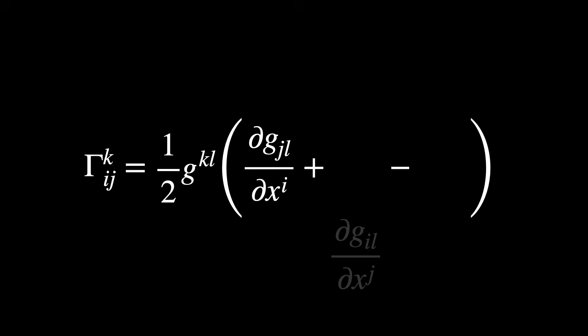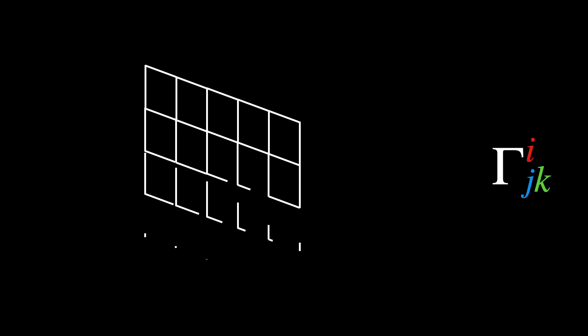Christoffel symbols are calculated in the following way. So one half of the inverse matrix times the sum and subtraction of the partial derivatives of the metric. This looks scary, I know. As you can see,